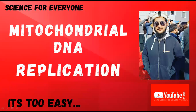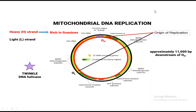Let's start the video lecture. First of all, you should know the structure of mitochondrial DNA. As I mentioned in a previous video, mitochondrial DNA consists of 22 genes that encode transfer RNA, and 13 genes that code for enzymes used in oxidative phosphorylation, plus two genes for 16S ribosomal RNA and 12S ribosomal RNA.